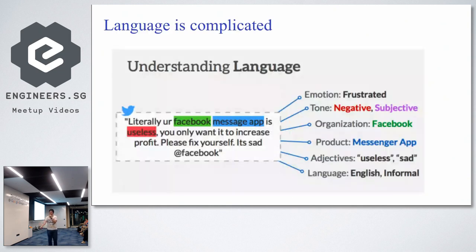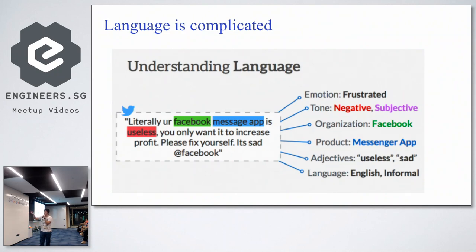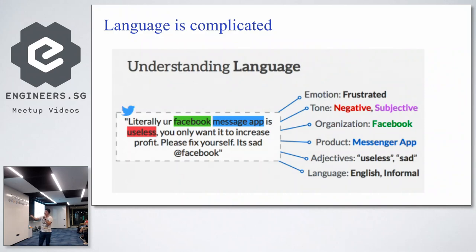To understand language, you can try to do classification tasks — classify based on emotion whether a message is frustrated, angry, or happy; the tone; the entities such as the product being discussed; and the adjectives or the language itself. These are all important key points to take note of when building NLP solutions.